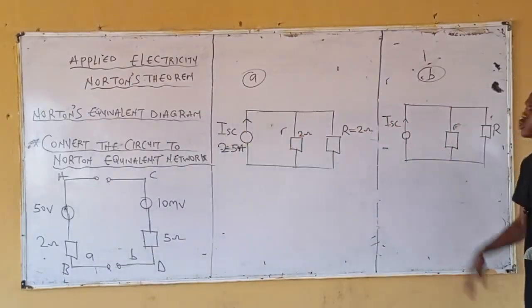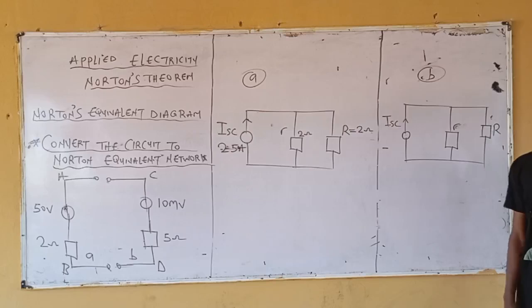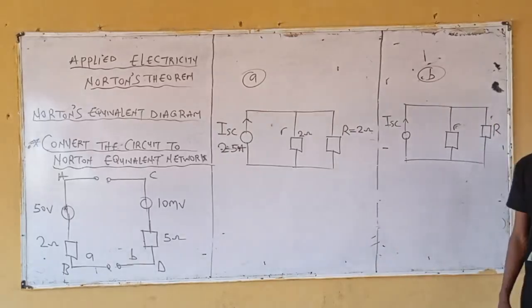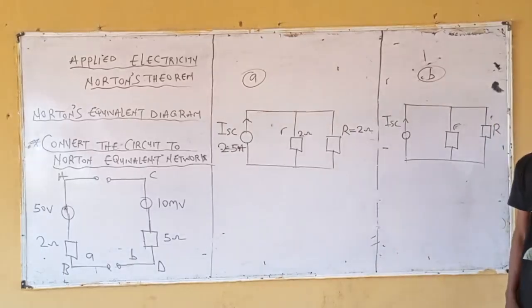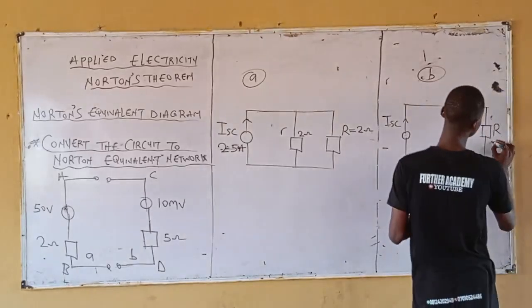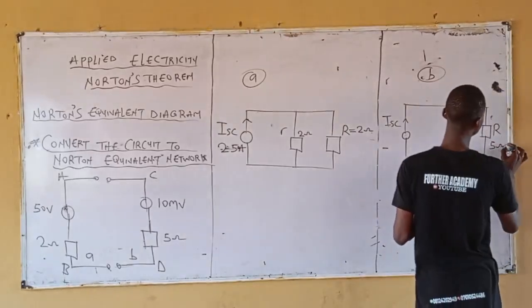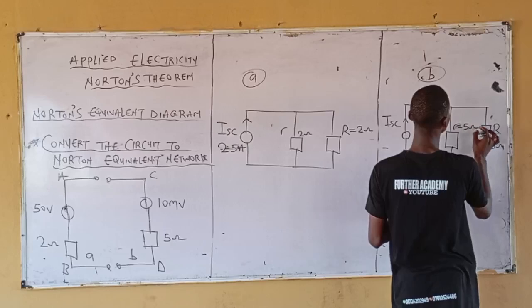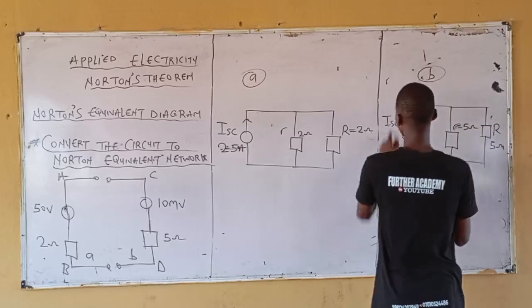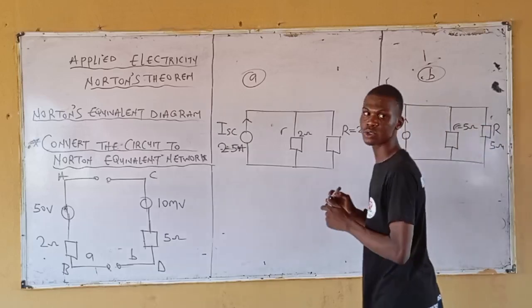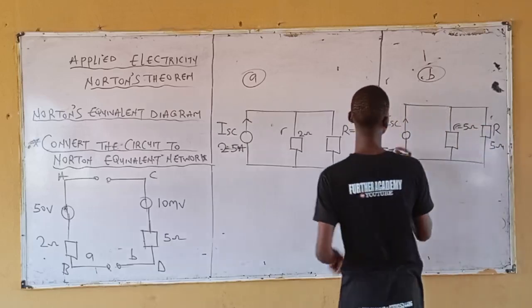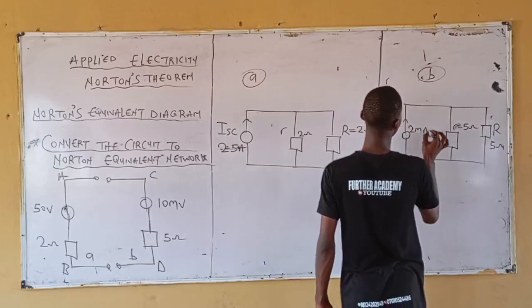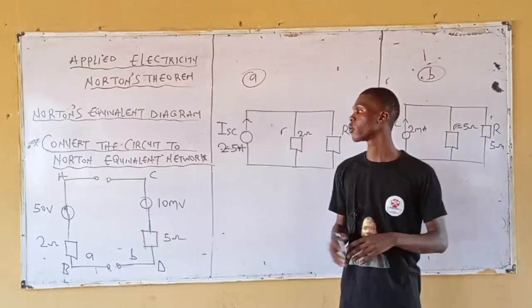For B — your load resistor is 5 ohms, your equivalent resistance is 5 ohms, and your ISC is 2 milliamps. Very simple.